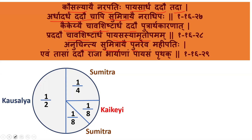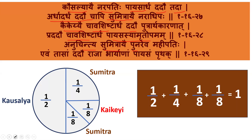So completely it becomes one. One-half plus one-fourth plus one-eighth plus one-eighth gives a complete one. A beautiful Sanskrit verse in Ramayana which talks about fractions and the addition of fractions.